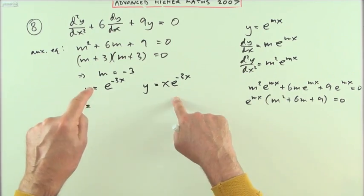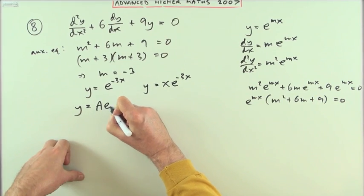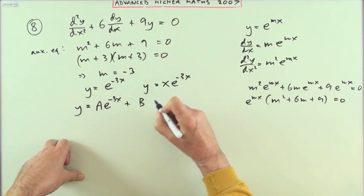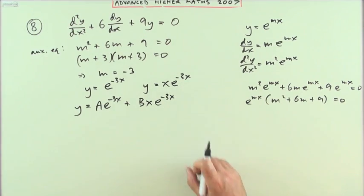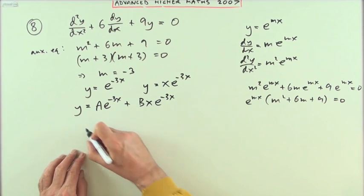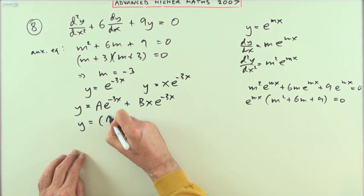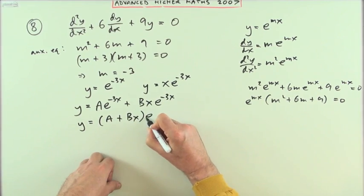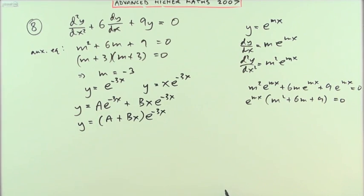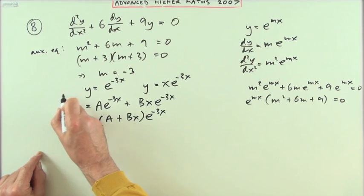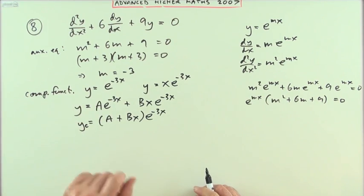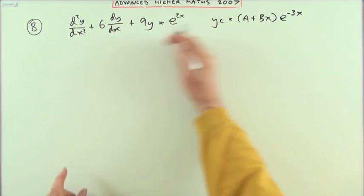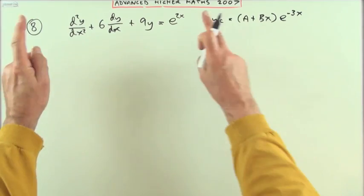The complementary function will be any linear combination of them. If I take a lots of this and b lots of that, that would form a solution to this system of equations. Another way of expressing that: y = (a + bx)e^(-3x). That's the complementary function, yc.